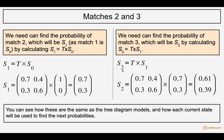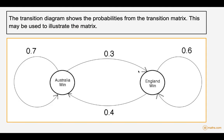Carrying on to the third match — the one we produced the tree diagram for — S2 uses the same transition matrix T, but this time we multiply it by the previous state. We get 0.7 squared and 0.12, giving us the probability here. So we can see how we can build these up.